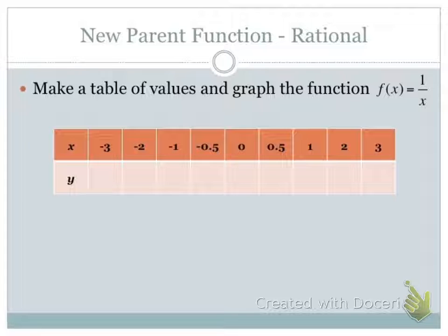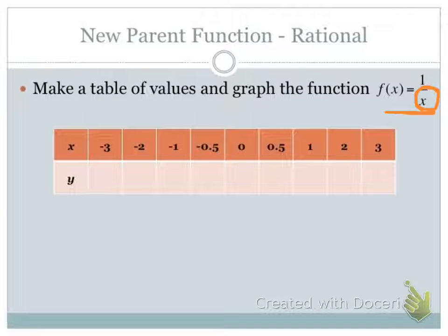The form of the function itself looks like this: f of x equals 1 over x. Basically, what makes something a rational function is the fact that you have a fraction and you have a variable in the denominator of that fraction. So the most simple form of that is simply 1 over x.